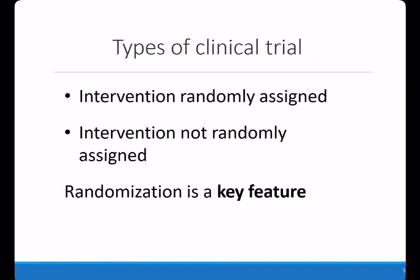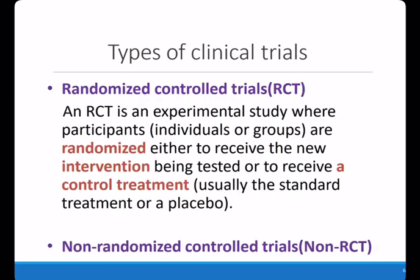According to whether the intervention is randomly assigned or not, clinical trials can be divided into randomly assigned and non-randomly assigned types, while randomization is actually a key feature of the clinical trial. A randomized controlled trial or randomized clinical trial is an experimental study where participants are randomized to receive either the new intervention being tested or a control treatment, which is usually the standard treatment or a placebo.